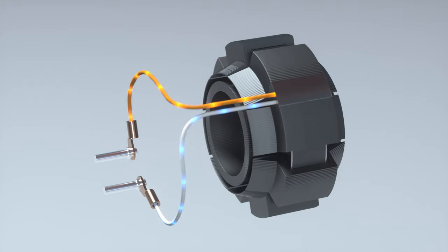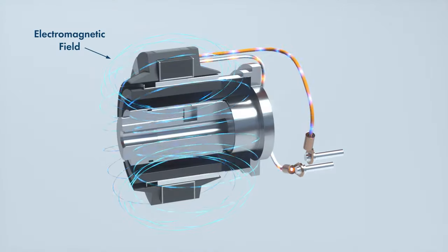First, electricity is introduced via the feed-through pins and travels to the stator assembly. The alternating flow of electricity creates a magnetic field around the stator assembly.